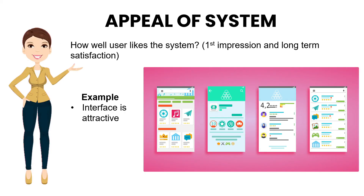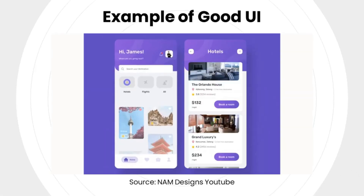Appeal of a system means how well the user likes the system — including first impression and long-term satisfaction. For example, an interface that is attractive. Here is an example of good UI.